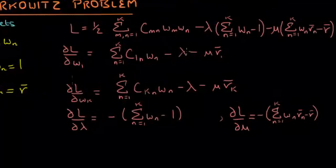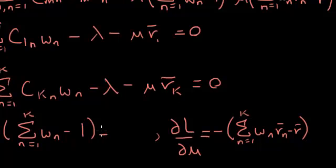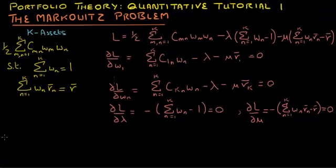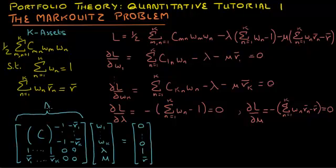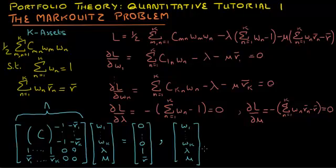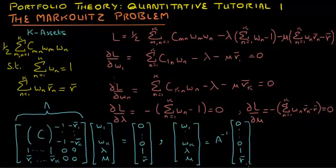Setting all these equations equal to zero allows us to solve for the weights that minimize the portfolio's variance. We organize these equations in matrix form — call this matrix A, assumed invertible. The solution is that the column vector containing the weights and parameters lambda and mu equals A-inverse times the column vector of zeros, 1, and R-bar. This is the unique solution that yields the optimal weights.